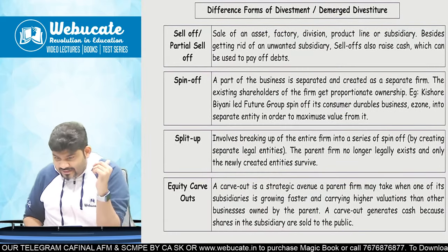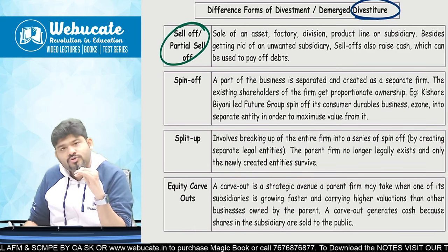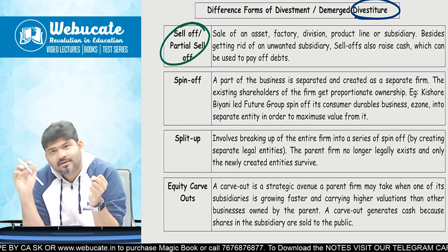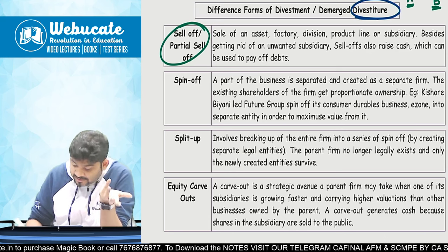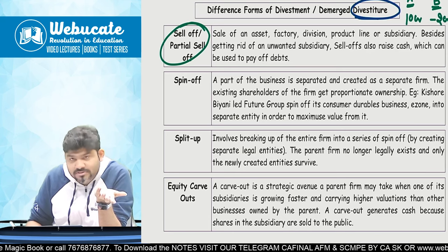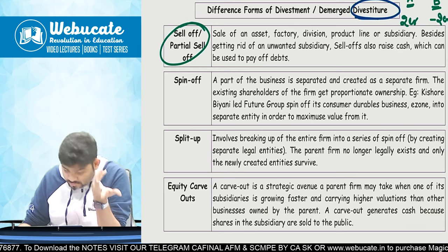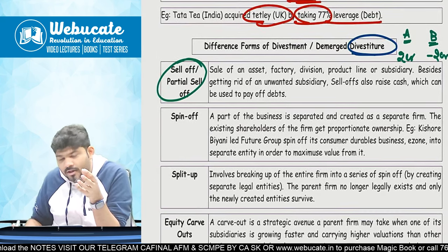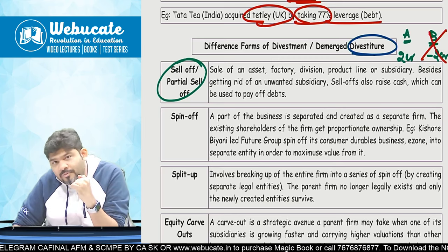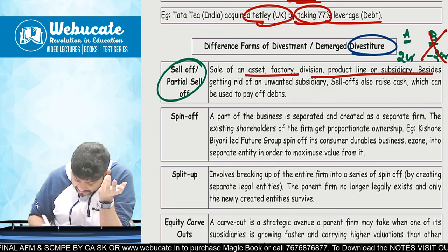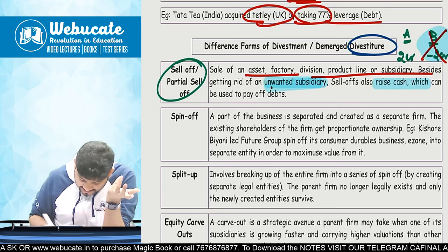Different parts of divestiture: first is sell-off or partial sell-off. If there is a division not doing well — say Division A makes 2 crore profit and Division B makes 2 crore loss — at consolidation you are making zero profit. So you sell off Division B. Now you are at least making 2 crore profit. Sale of an asset, factory, division, product line, or subsidiary — getting rid of an unwanted subsidiary. A sell-off also helps to raise cash.